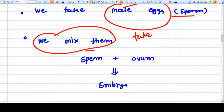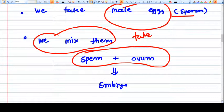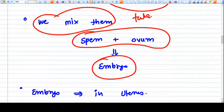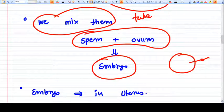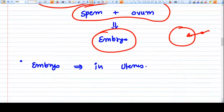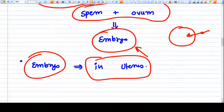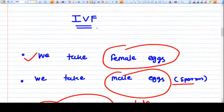The sperm and ovum get mixed and become an embryo. The sperm will fertilize the ovum, we get the embryo, and that embryo will be transferred manually into the uterus. So this is the basics of IVF.